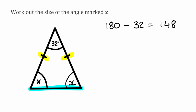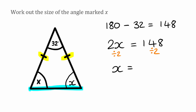We know that x plus x is 2x, so 2x equals 148. To figure out the value of x, all we've got to do is divide both sides by 2. So x equals 148 divided by 2, which gives us 74. Our angle marked x is 74 degrees.